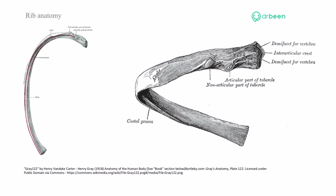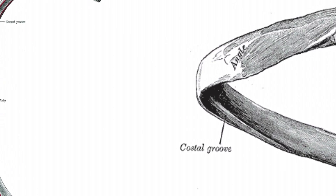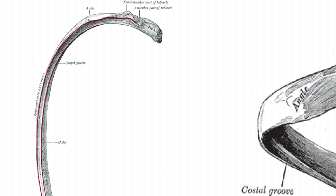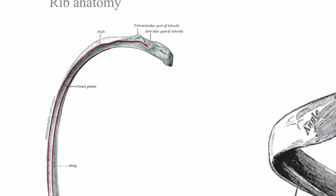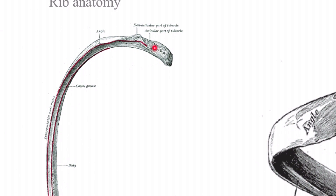This is another view of the rib — the back side of the rib, inferior view of the rib. Here is the articulation — the tubercle.